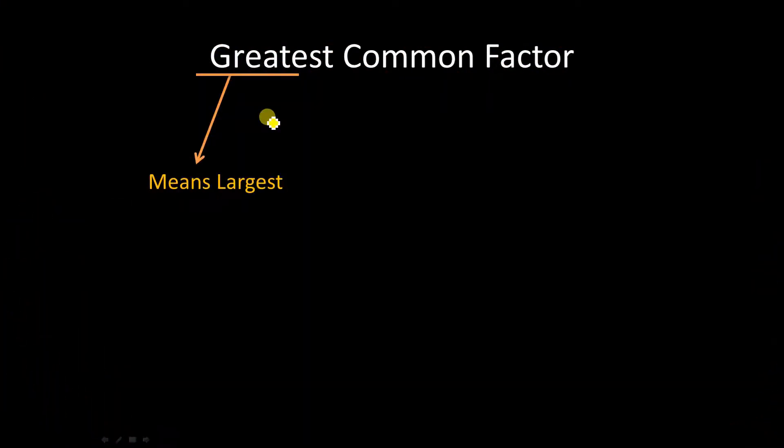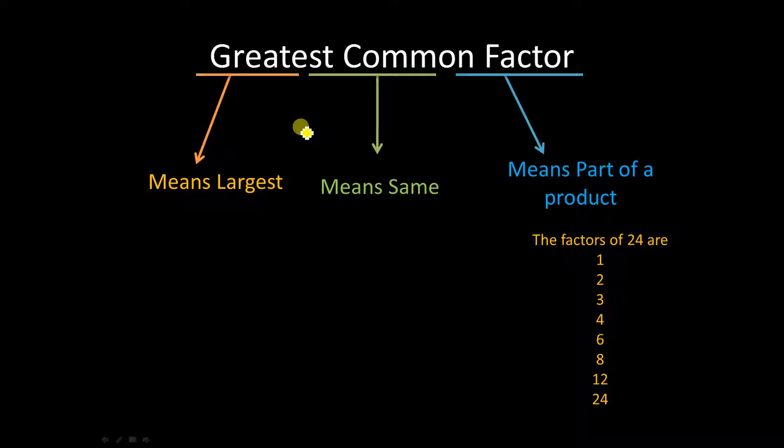Greatest common factor. Let's talk about what this means. Greatest means biggest, common means same, and factor, well that's a part of a product. For example, the factors of 24 are right here on the screen: 1, 2, 3, 4, 6, 8, 12, and 24. All of those numbers divide into 24.